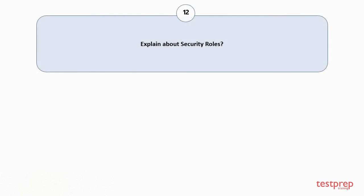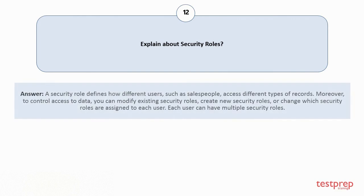Question number 12: Explain about security roles. A security role defines how different users, such as salespeople, access different types of records. Moreover, to control access to data, you can modify existing security roles, create new security roles, or change which security roles are assigned to each user. Each user can have multiple security roles.